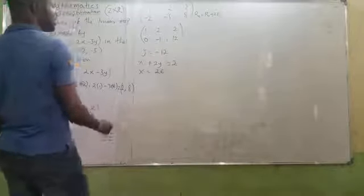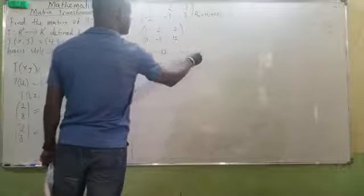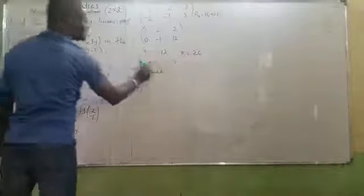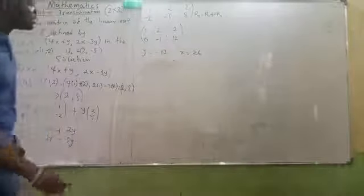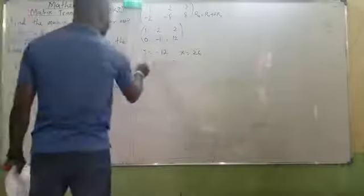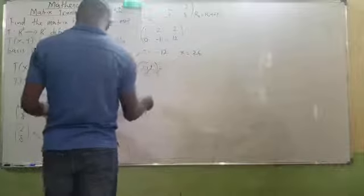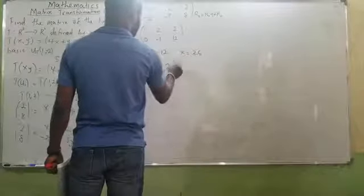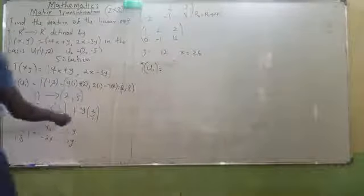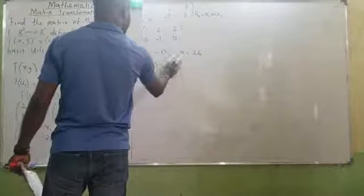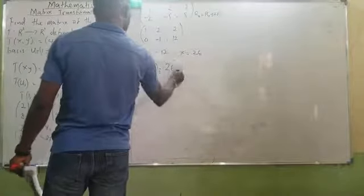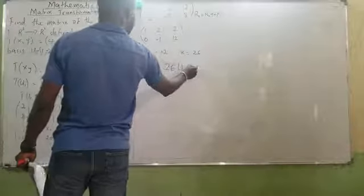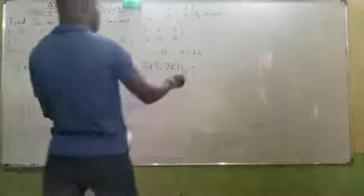It means my x is 26. Since I know that my x is 26, I can say that T(u1) will be equals to 26 of U1 minus 12 of U2. That is what I will do there.